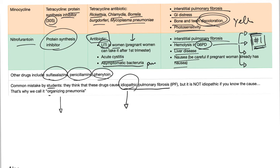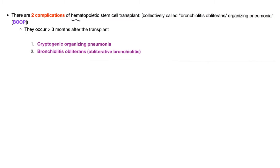What do we mean by 'organizing'? We mean fibrosis — this is the kind of organization that pathologists love. There are two complications of hematopoietic stem cell transplant collectively called BOOP — bronchiolitis obliterans organizing pneumonia. These occur more than three months after the transplant.